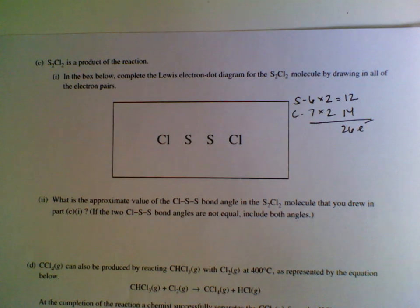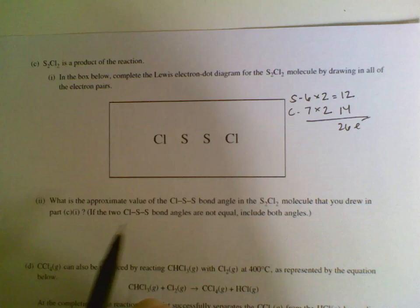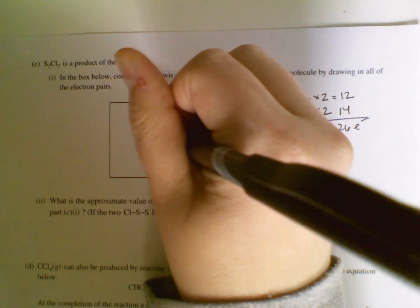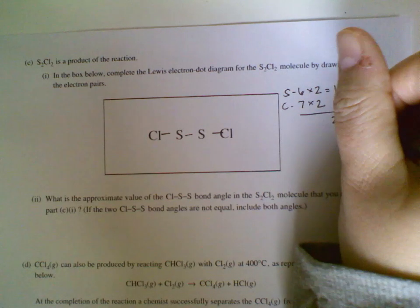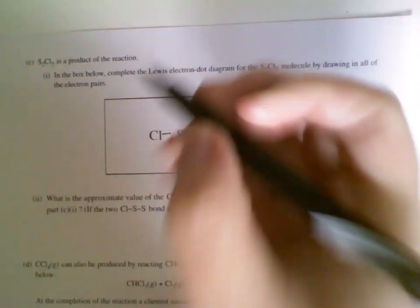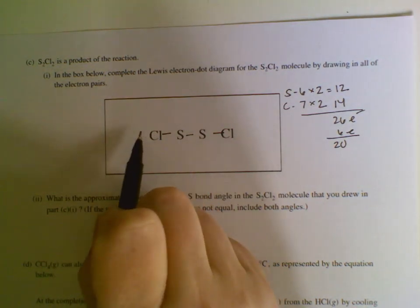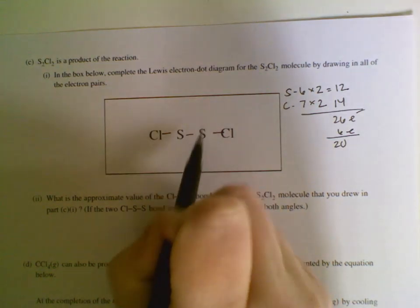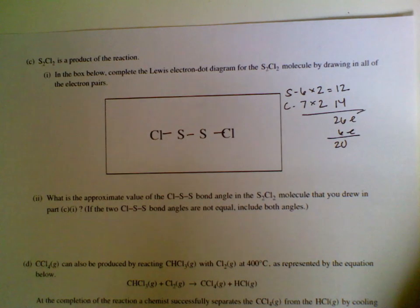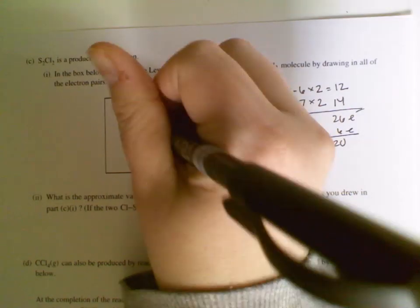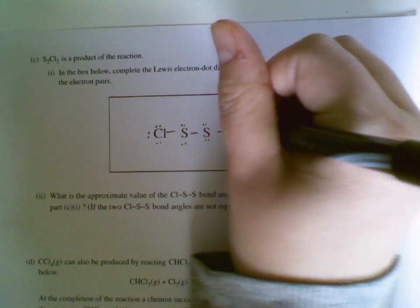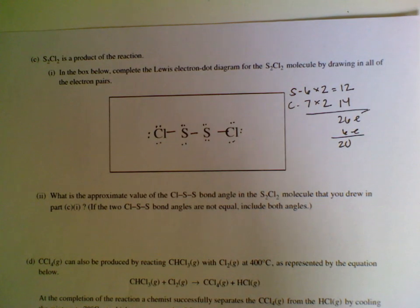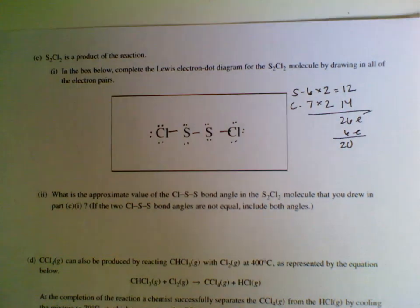So if we do our Lewis structure, the first thing we're going to do is we're going to connect with lines. If you want to draw those as dots, you can. Drawing those three lines takes away six electrons, which means I'm left with 20. If I look at my Lewis structure, I need 2, 4, 6, 8, 10, 12, 14, 16, 18, 20. And so I've got 20 electrons that I need, 20 electrons that I have. So in this case, you are going to be able to do this with all single bonds, and you don't have any extras. But don't get cocky with this because it doesn't always work out that way.